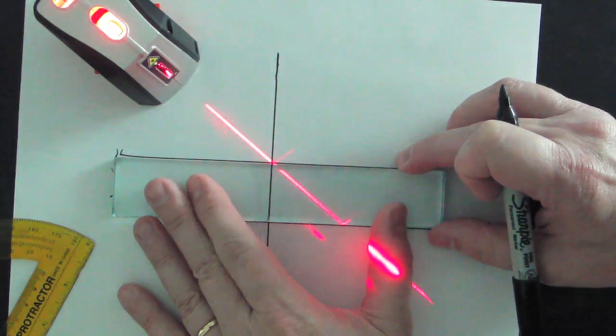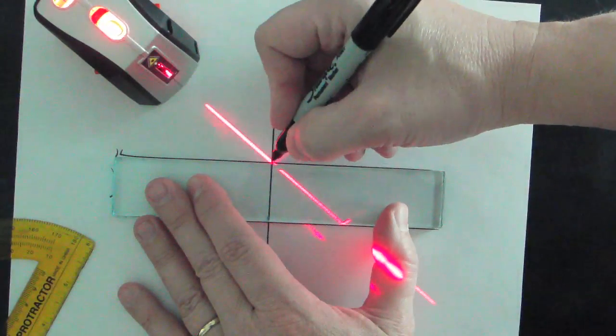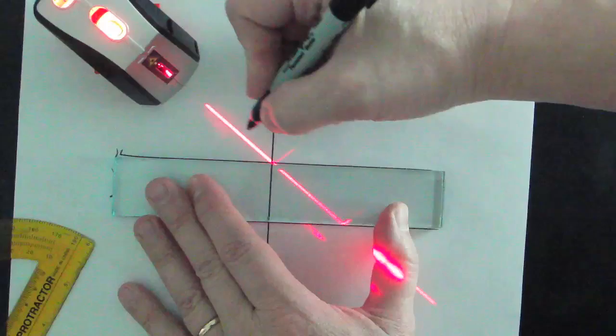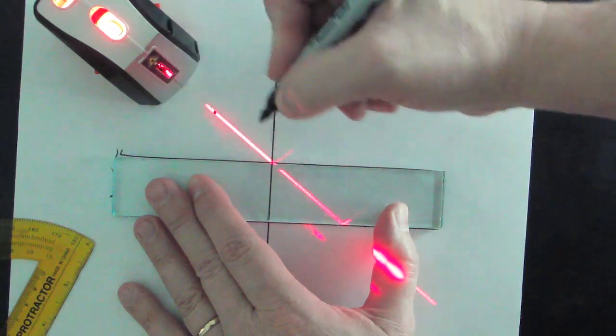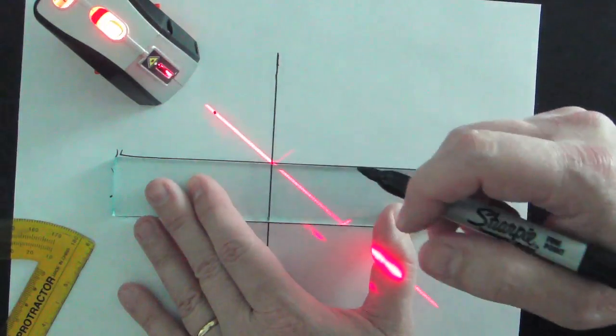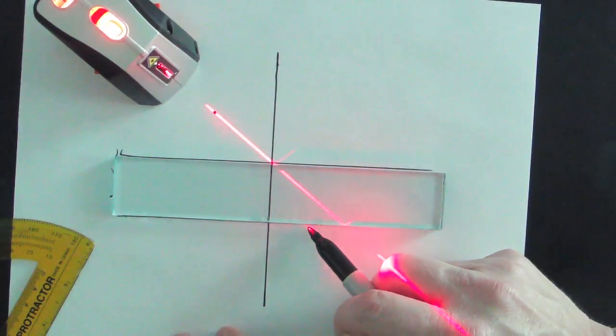So I need to be able to draw my incident ray and my refracted ray. I know that's right at the intersection between the normal line and the boundary. I'll put a dot right here. That's going to become my incident ray when I draw it. And I'll put another dot right here.